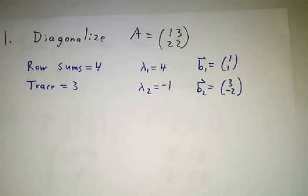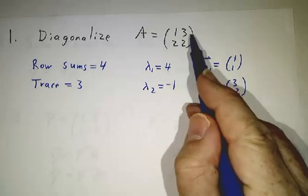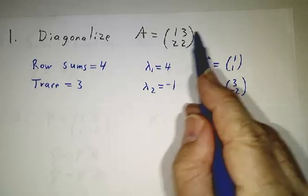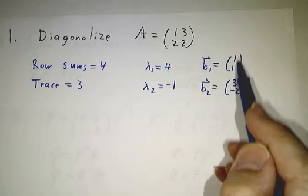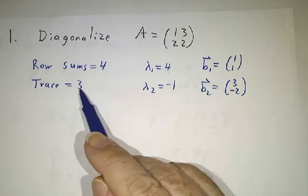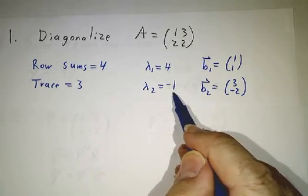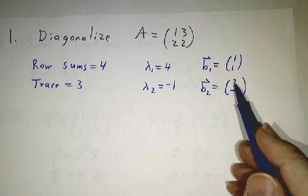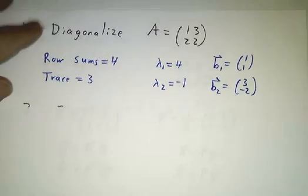Our matrix, 1, 3, 2, 2. This is actually the identity plus a matrix we've already seen before. The rows add up to 4, so 4 has to be an eigenvalue, and (1, 1) has to be an eigenvector. Since the trace is 3, the eigenvalues add up to 4, so the other eigenvalue has to be -1, and you can work out that the eigenvector is (3, -2). Great, we've done part one.